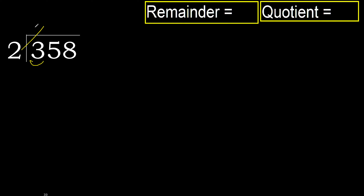2 multiplied by 2 is 4. 4 is greater, so multiply by 1. 2 is not greater. Subtract. 3 minus 2 is 1.